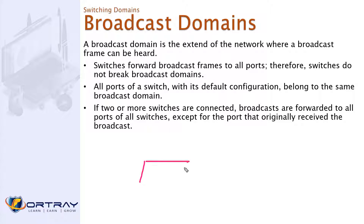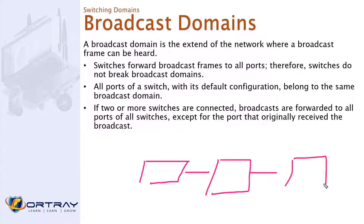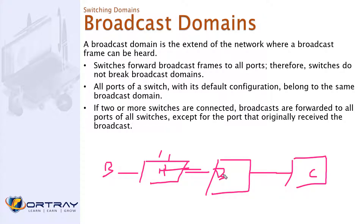If two switches are connected together through one cable — as seen in our lab where we have three switches connected via fiber cable, A, B, C — a broadcast message coming in on switch A will be forwarded out all ports on A, including the uplink port. Switch B will hear the broadcast and send it out all its ports as well, and switch C will also forward the broadcast out all its ports.